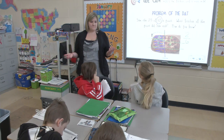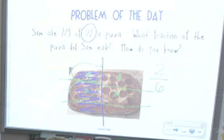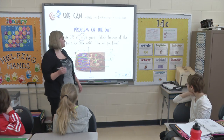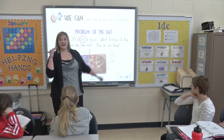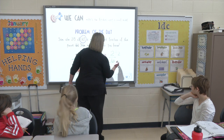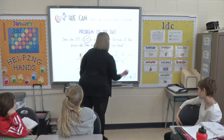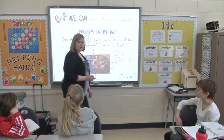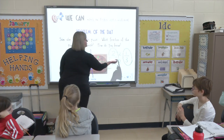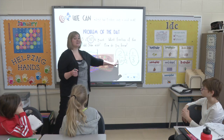Is that technically the right answer? Yes. Could we do something a little bit more to that answer? We're not changing the value — the value is going to stay the same. But what is that called, Mia? Reducing. We're going to try to reduce this fraction to simplest form. I need to divide the numerator and the denominator by the same number. Caden says by two. How many times does two go into two? Once. How many times does two go into six? Three times. Can one-third be reduced? No, that's in simplest form. So if you said that Sam ate two-sixths of the pizza, you're right — that's still the right answer because two-sixths is equivalent to one-third.